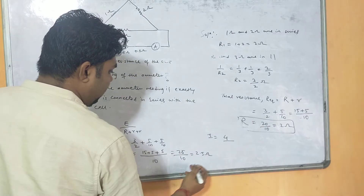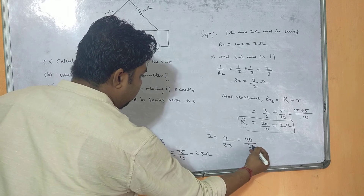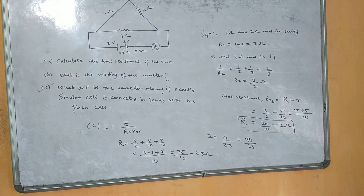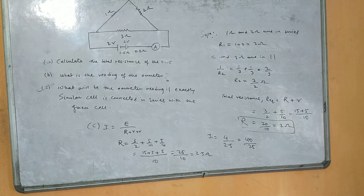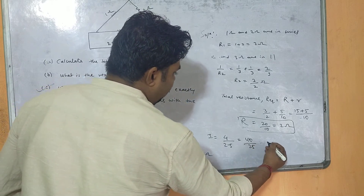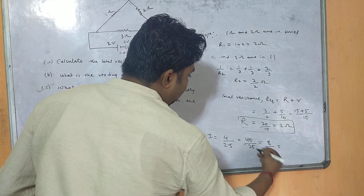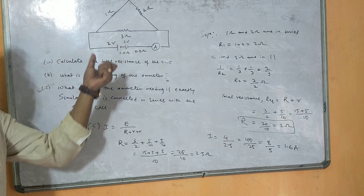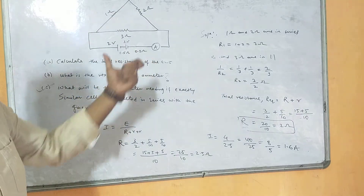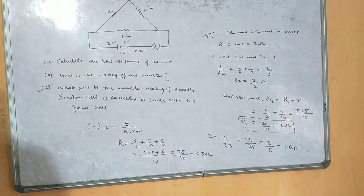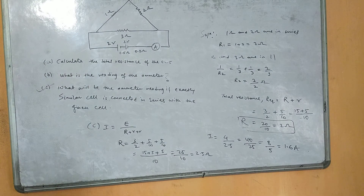New current = 4/2.5 = 40/25 = 1.6 ampere. So if two EMFs are connected in series, the total resistance also adds up, and the total current becomes 1.6 ampere. Previously with one cell it was 1 ampere; now with two cells in series it is 1.6 ampere.